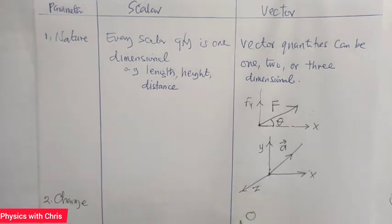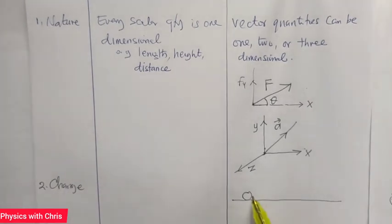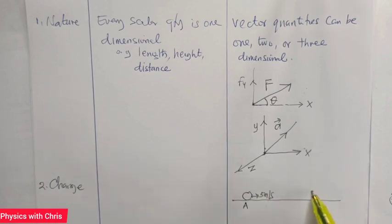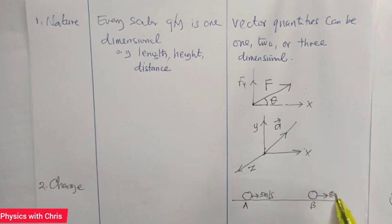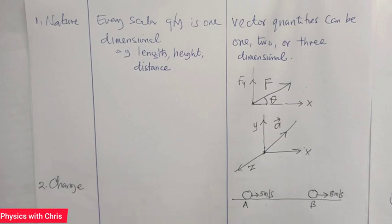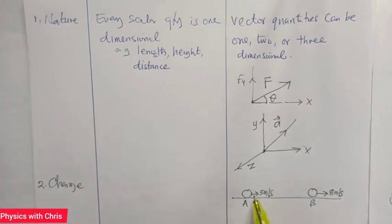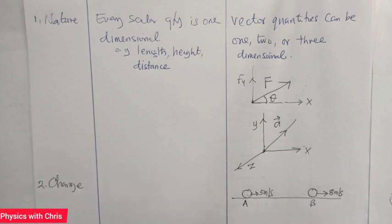For instance, consider a body moving along a straight line where direction is maintained. If the speed of the body is five meters per second at point A, and after a time t the body is at point B with a speed of seven or eight meters per second, the change in speed means the velocity has changed — the magnitude only has changed, showing the vector velocity has changed.